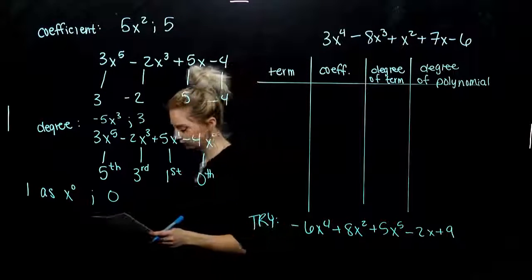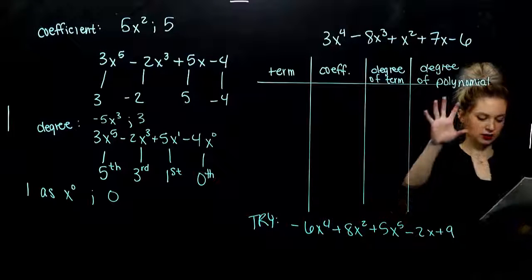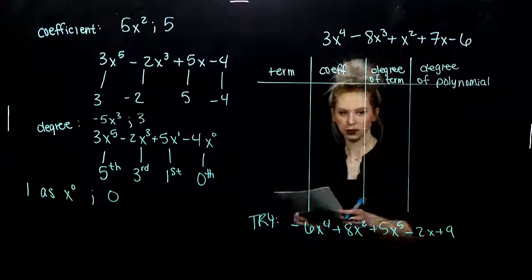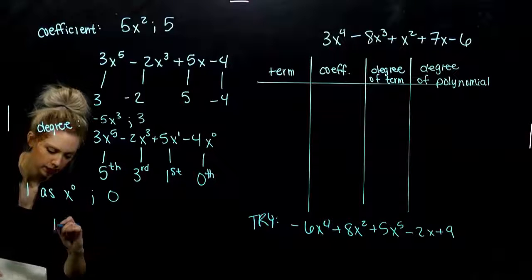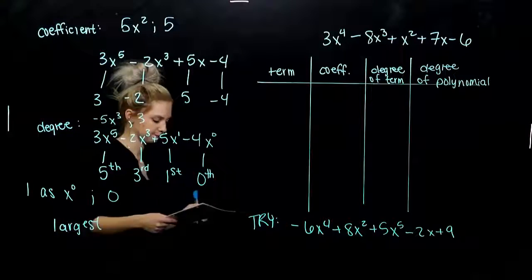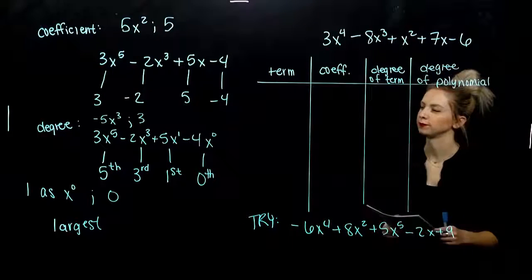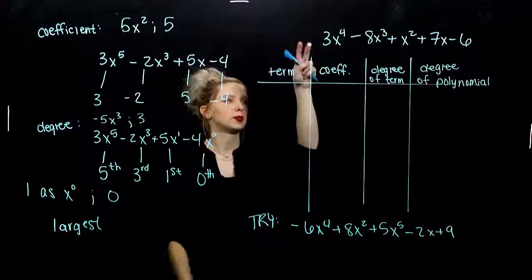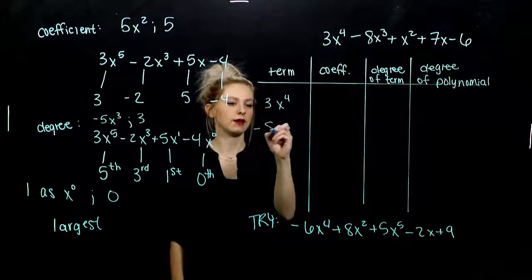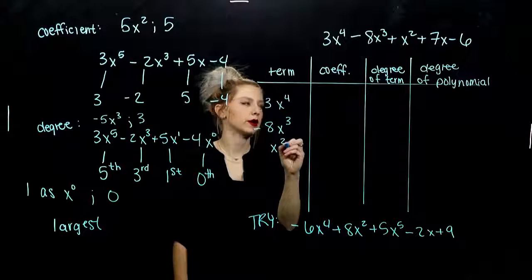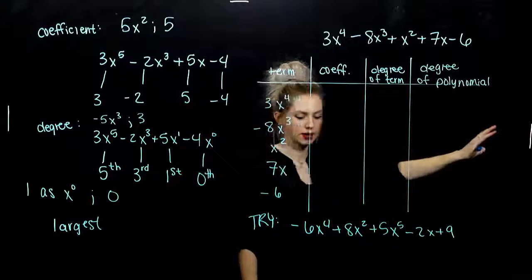In the next polynomial, we want to identify the term, the coefficient, the degree of each individual term, and then the degree of the polynomial. The degree of the polynomial is the largest of all of the term degrees — the largest power of all of the terms. So even if they're not in order, we need to look and see which term has the highest power. My terms are: 3x to the 4th, negative 8x cubed, x squared, 7x, and negative 6.